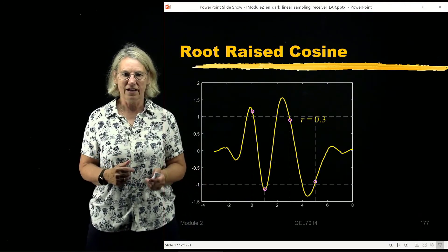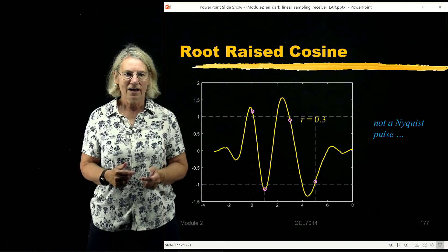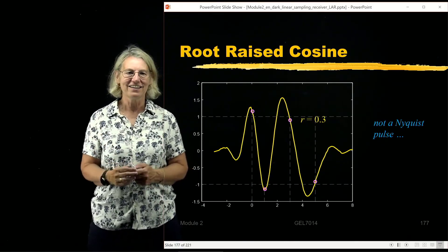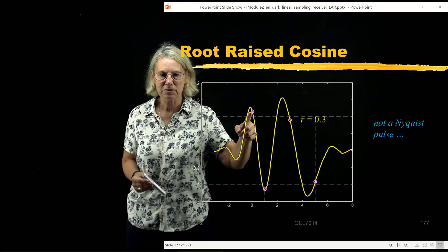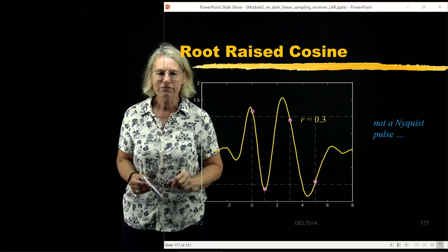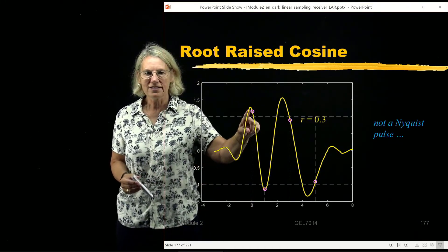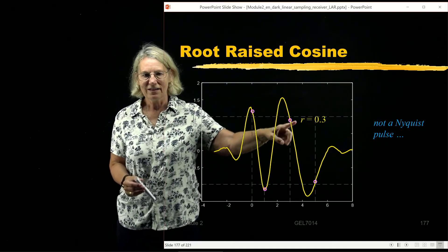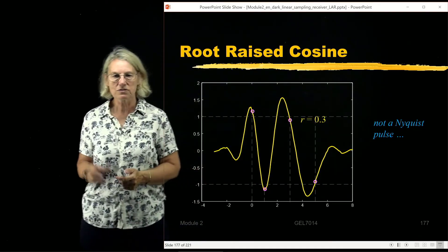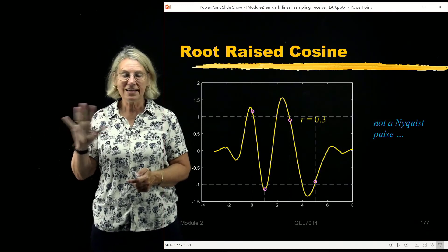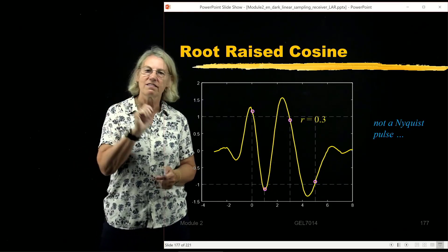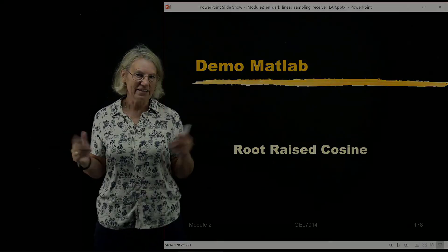So this is the R equal 0.3 root raised cosine pulse, and it's not a Nyquist pulse. We can see it's not a Nyquist pulse because even if I had perfect sampling, there is an offset; it's not exactly at the correct level. So it's a little off, but it doesn't matter because that's an intermediate effect that we never see. It's always a transmitter then receiver when we finally see.